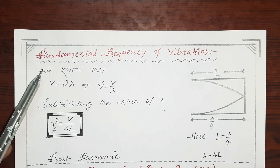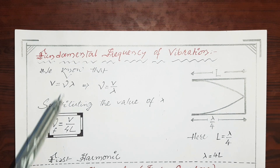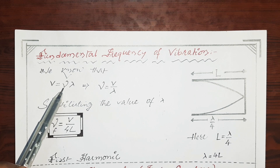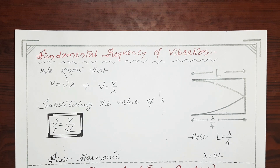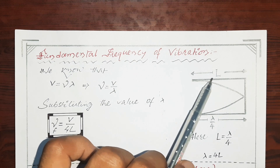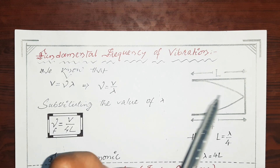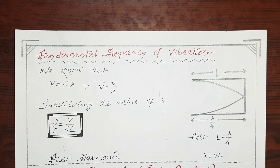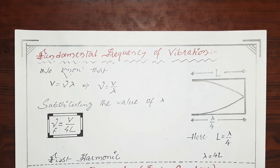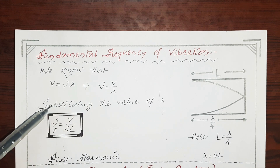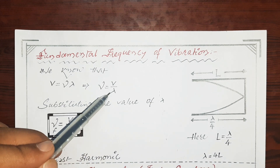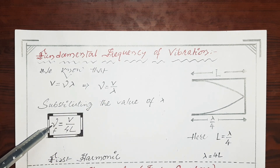This minimum distance would be equal to lambda by 4, as we know from our previous knowledge. Now, we know that our universal wave equation is V equals nu times lambda. From this equation, I can find nu that is equals to V by lambda. As you see the diagram, the length of the pipe is L and the distance between antinode and node is lambda by 4. So I can equate both of them so that L equals lambda by 4. From this, I can find lambda that is equals to 4L. Substituting the value of lambda in this equation, the fundamental frequency nu_F is equals to V by 4L.